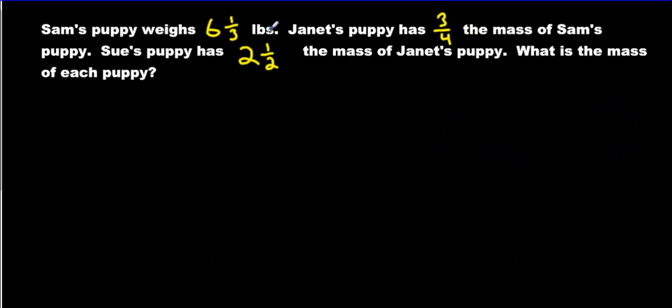Sam's puppy weighs 6 and 1 third pounds. Janet's puppy has 3 quarters of the mass of Sam's puppy. Sue's puppy has 2 and 1 half times the mass of Janet's puppy. What is the mass of each puppy? Okay, well, we know Sam's puppy. We already have one number. That's going to be 6 and 1 third pounds. Haha, we already got one of them. We just have two more to go. Now, Janet. Let's look at Janet's puppy.